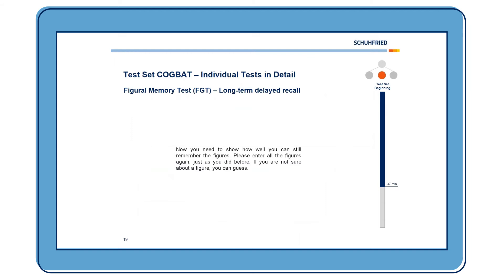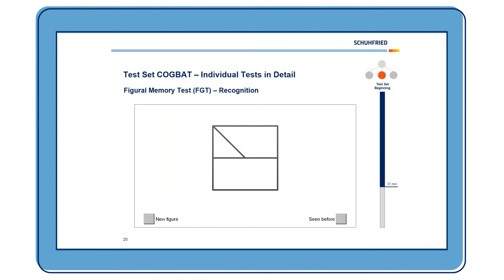Now we have the third phase of the Figural Memory Test — the long-term delayed recall — which uses the same instructions as the short-term delayed recall. The client enters all the figures they can remember. To gain even more diagnostic information, there is also a recognition phase where different figures are presented and the client decides whether each one is new or has been seen before.